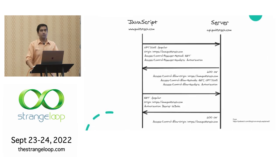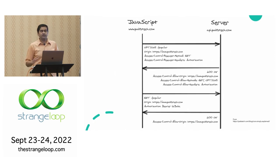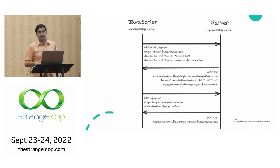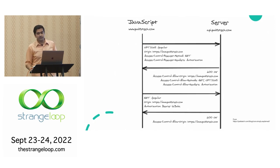So the OPTIONS request — the preflight request — is a request to check if the request is allowed, and then the final request keeps normal CORS semantics checking allow origin and so on. When the preflight cache expires, you do the preflight again. For a cross-origin GET request with an authorization header: the client first makes an OPTIONS request saying I want method GET and header Authorization, the server responds confirming GET and Authorization are allowed, and then you can make the actual GET request with the authorization header.